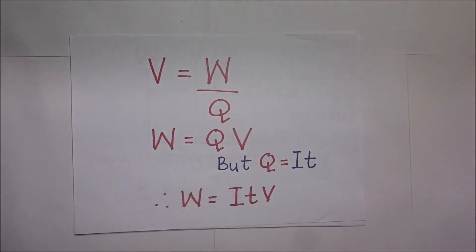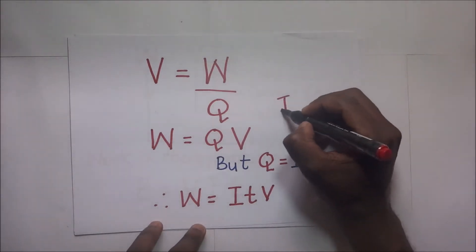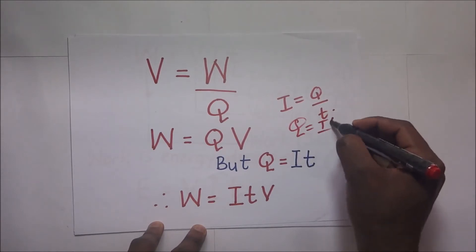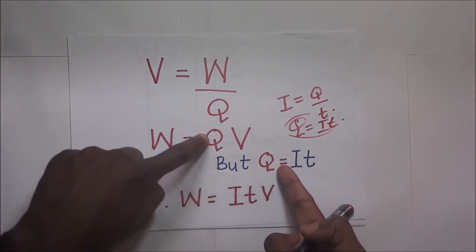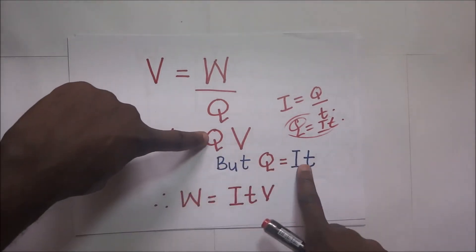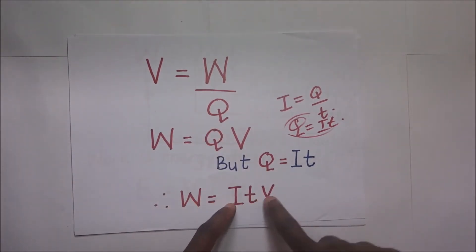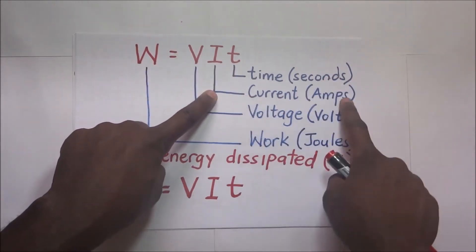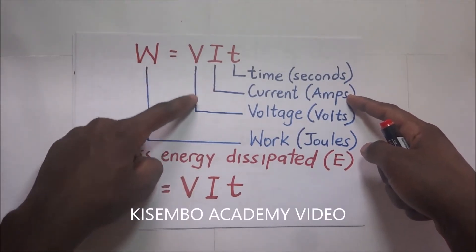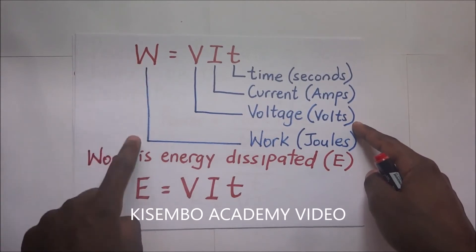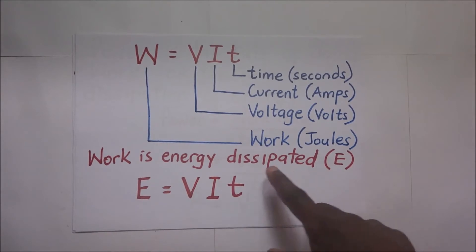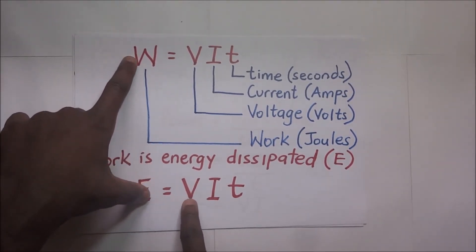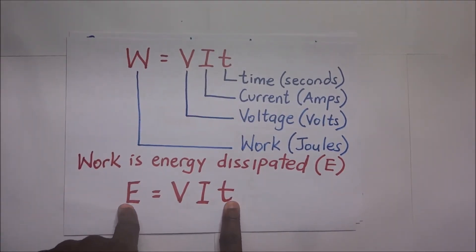We know that current is the rate of flow of charge: I = Q/T. When we make Q the subject of the formula, we get Q = I times T. Substituting for Q in the expression for work, we get work done equal to Q — which is IT — times V. So work done equals ITV, or written as E = VIT. The work done is the same as the energy dissipated, which is why the expression for energy dissipated is E = VIT.